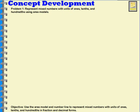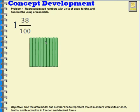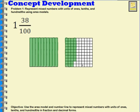Let's try another one: one and 38 hundredths. I'm going to start with an area model to represent my one — the whole area model will be shaded in, this time in green. Then 38 hundredths of another model will be shaded in: 10, 20, 30, and 8 more — one through eight. So this area model represents one whole and 38 hundredths. Written as a decimal, it would be 1.38 — one and 38 hundredths.